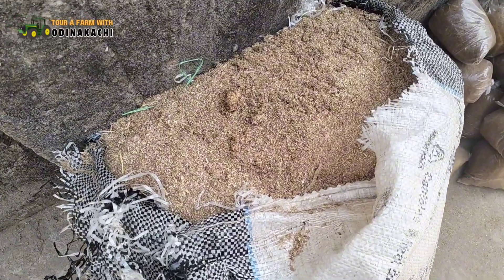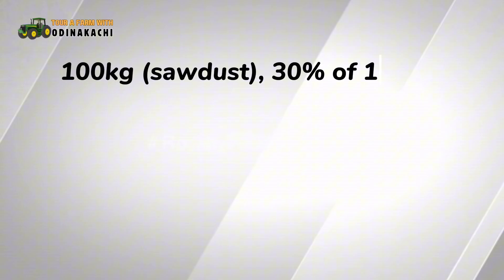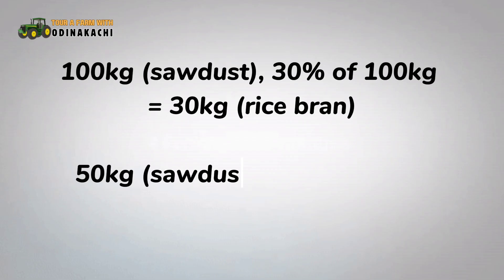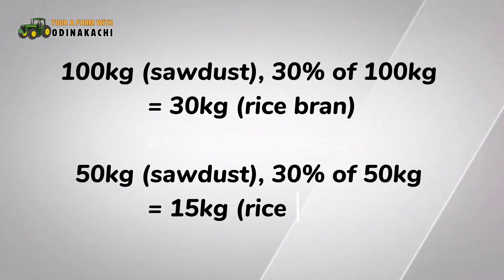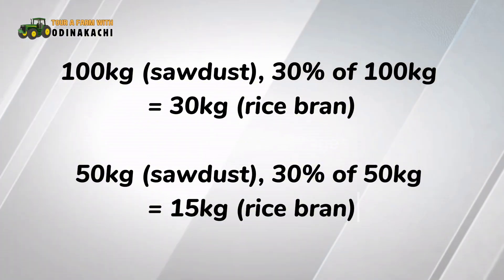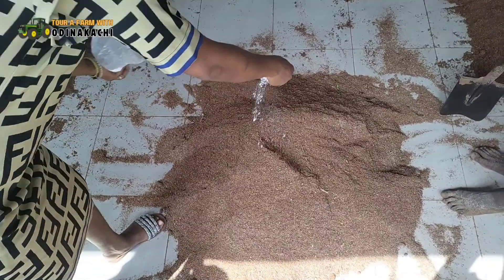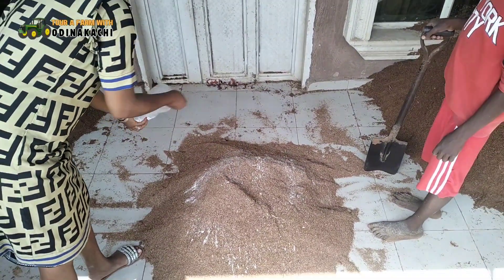For every quantity of sawdust you use, 30% rice bran is added. For example, if you are using 100 kg of sawdust, 30 kg of rice bran is required; and if you are using 50 kg of sawdust, 15 kg of rice bran is added. The sawdust and rice bran are then mixed together with a small amount of limestone, which helps balance the pH level in the mixture.